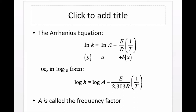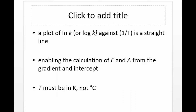If you represent this as an equation of a straight line, plotting ln k or log k against the inverse of temperature should give a straight line, from which you can calculate the value of E and A from the gradient and the intercept. The temperature used must be converted to Kelvin and should not be in degrees Celsius.